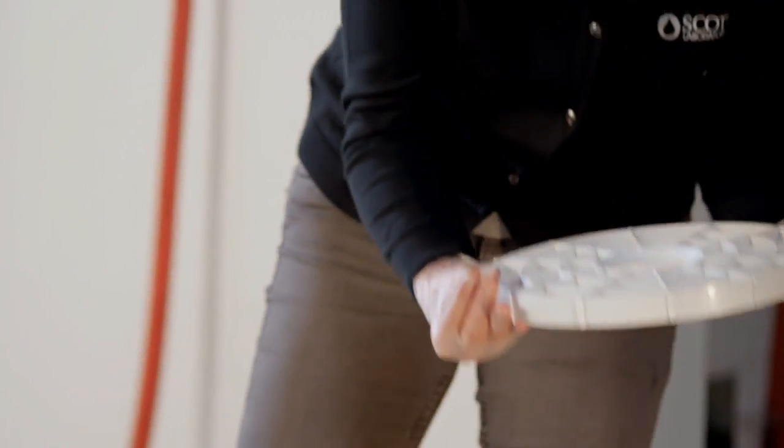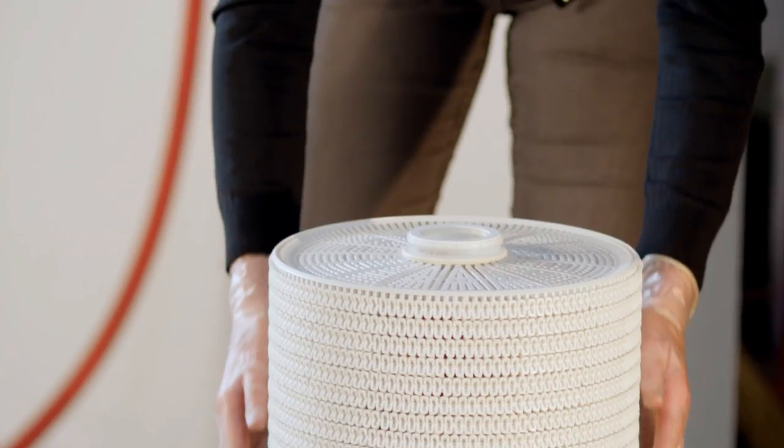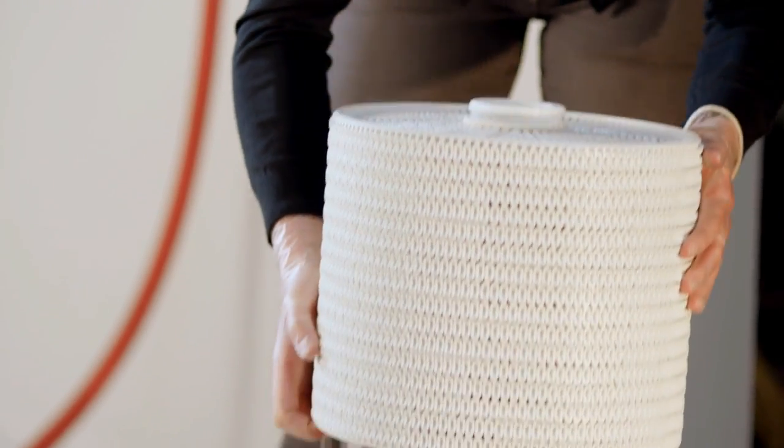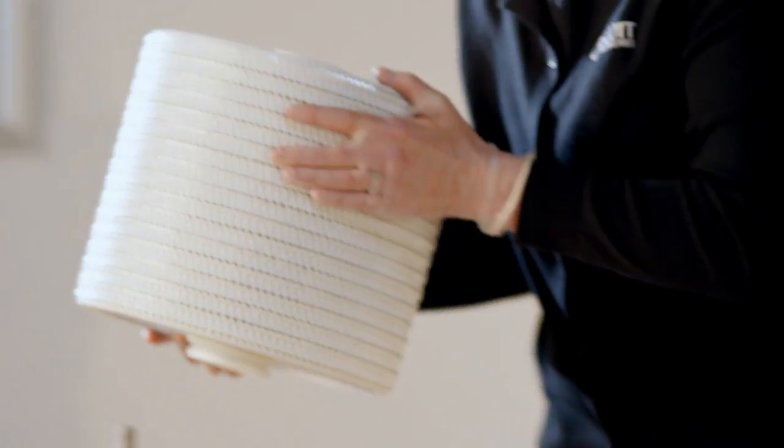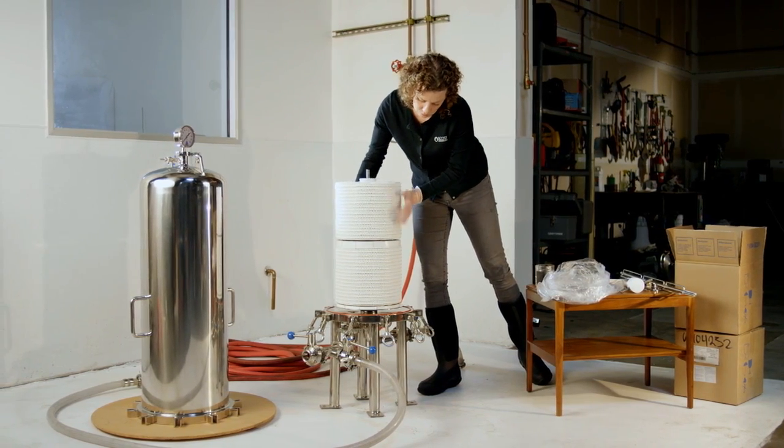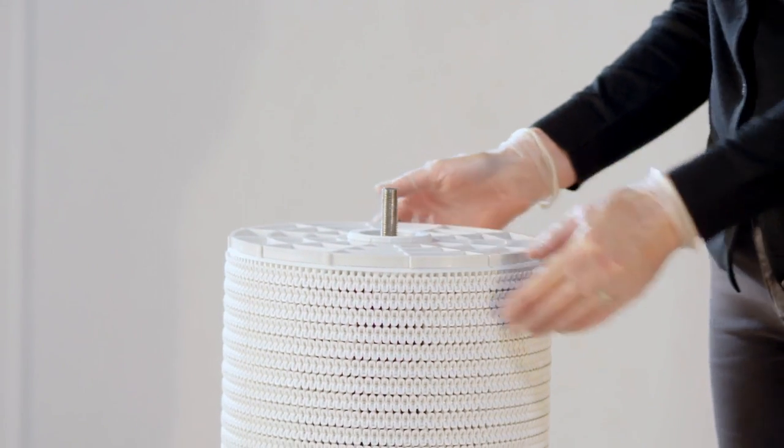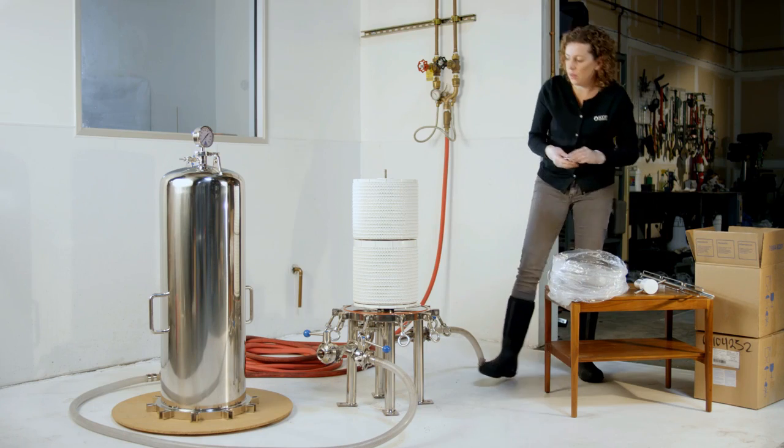Place intermediate back flush support plate on top of first module. Remove second module of equal filtration grade and place on top of intermediate back flush support plate. Finally, place the second-end back flush support plate followed by the top plate.